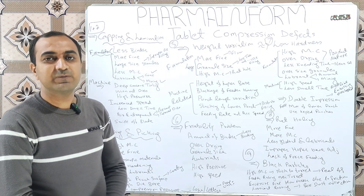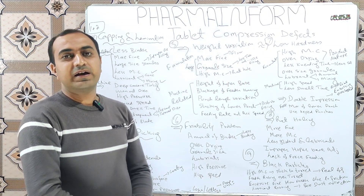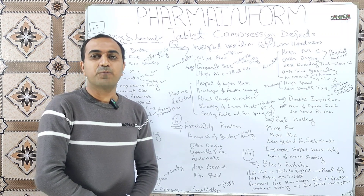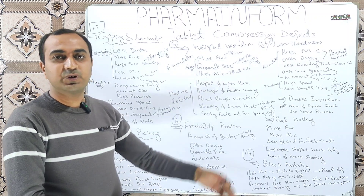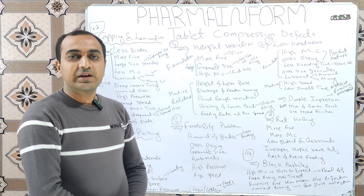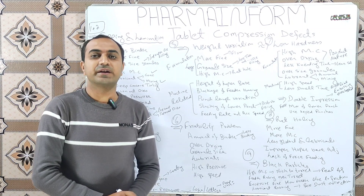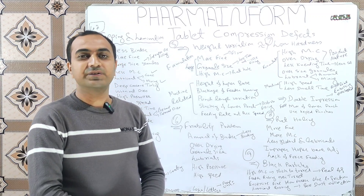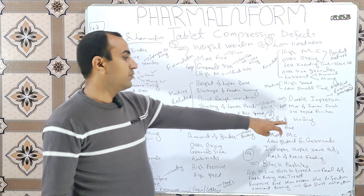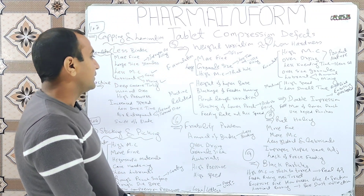If granule size is very large and tablet weight is small, die filling will not be proper and weight variation will be observed — maintain proper fines along with granules or use a proper sieve for granule size. High moisture content in the formulation will also result in weight variation due to rat holing.